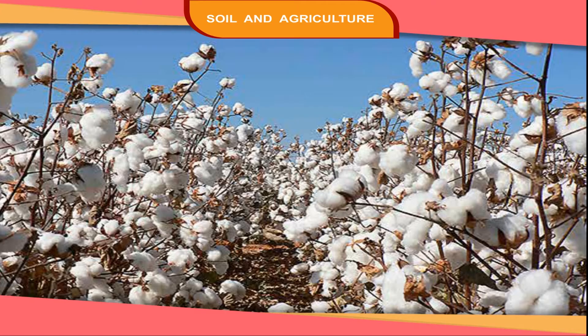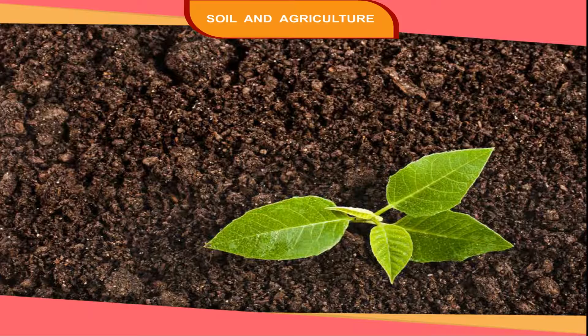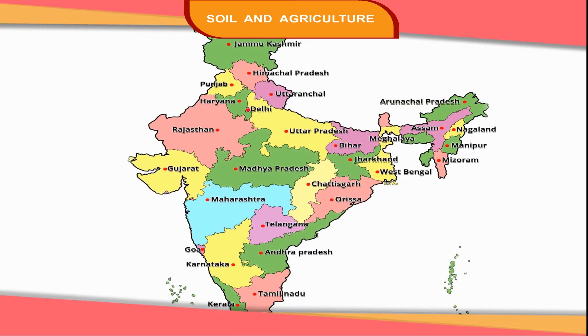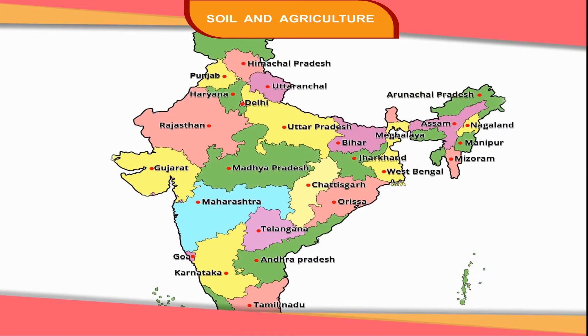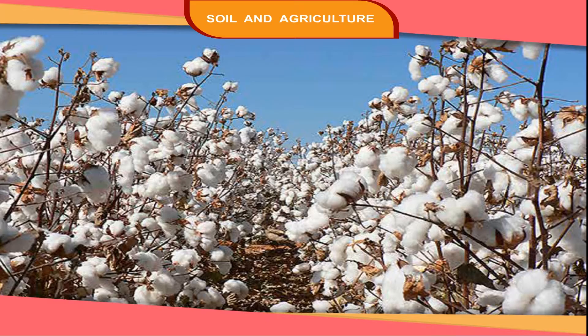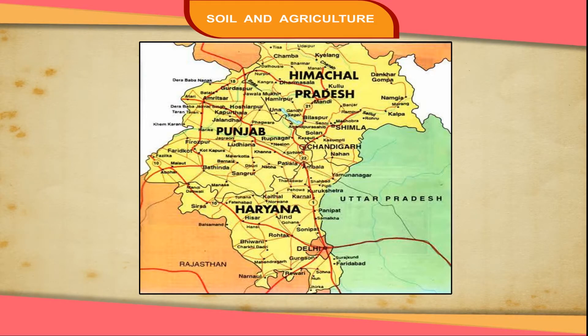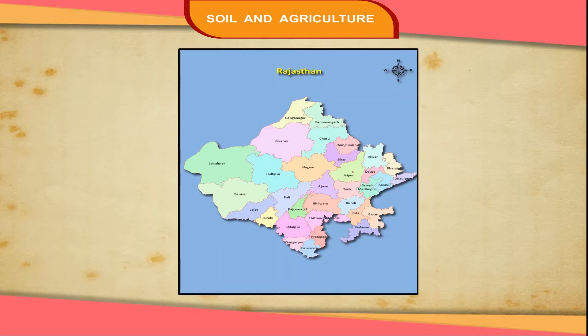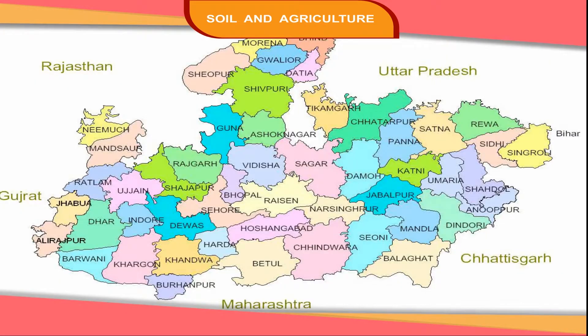Cotton grows well in black soil. Maharashtra and Gujarat are the main cotton producers. Cotton is also grown in Punjab, Tamil Nadu, Rajasthan and Madhya Pradesh.